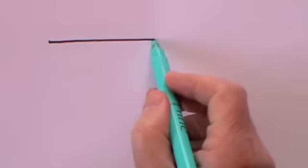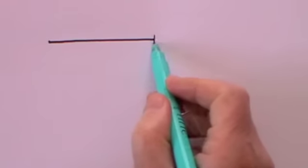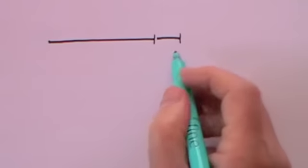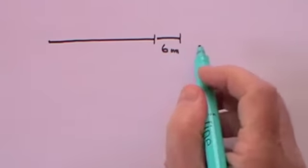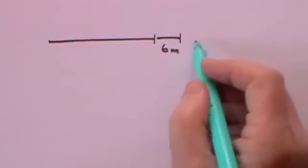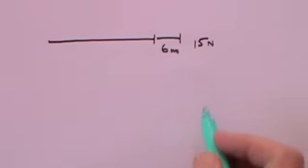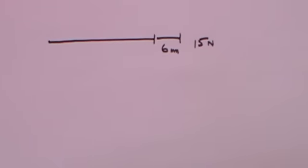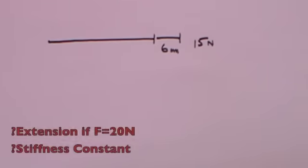Question one. You're given a wire and you are told that the wire will extend by 6 millimetres if it is subjected to a force of 15 newtons. The question is: what will the extension be if the force is 20 newtons, and what is the stiffness constant?